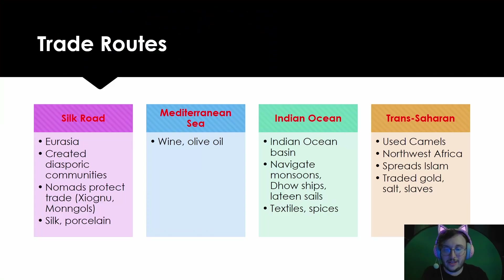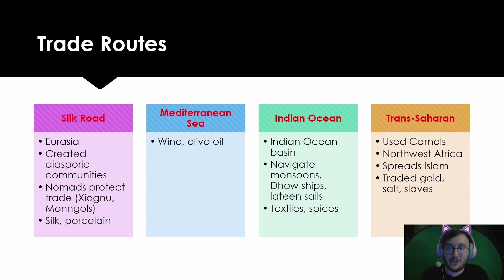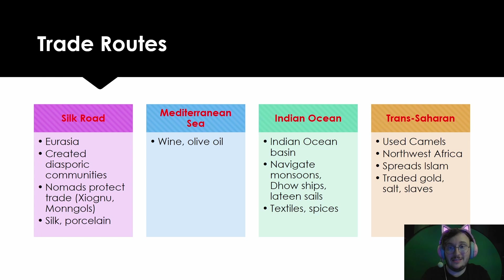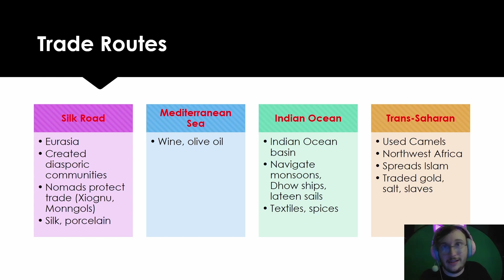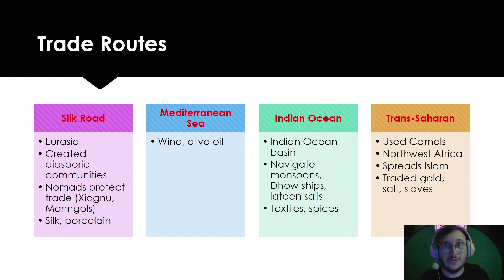The next trade route is the Mediterranean Sea — a major ocean-based route that Europeans used, trading luxury goods like wine and olive oil. A luxury good is something people use for comfort, not necessity. You can't survive on wine or olive oil alone — they're not essential crops. Same with silk and porcelain — you can't eat them. They're optional, luxurious goods.